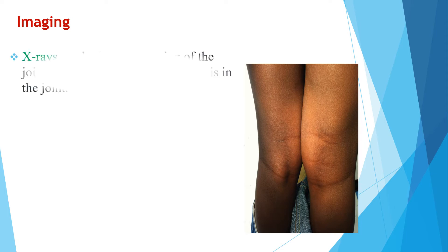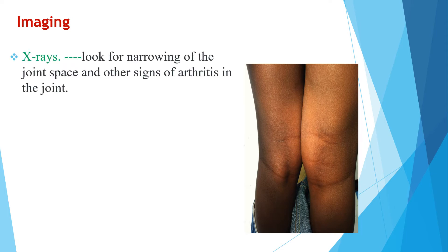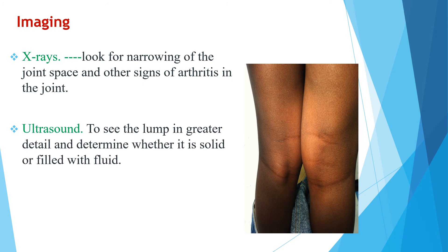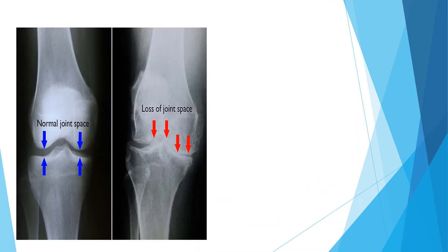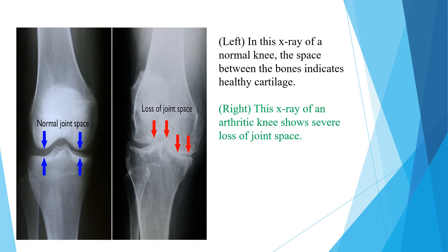Regarding imaging for diagnosis, X-ray can show narrowing of the joint space and other signs of arthritis in the joint. It is also diagnosed by ultrasound to see in greater detail and determine whether it is solid or fluid-filled. Sometimes MRI can be done. This X-ray shows a patient with a popliteal cyst — the normal joint space on the left side and the joint with a popliteal cyst on the right side, showing an arthritic knee with severe loss of joint space.